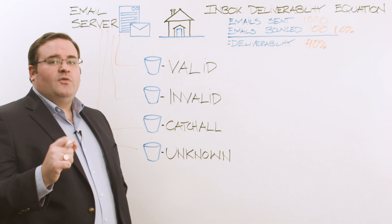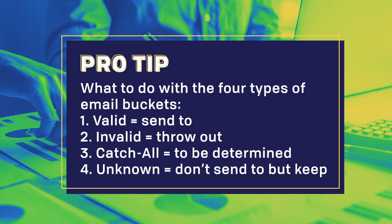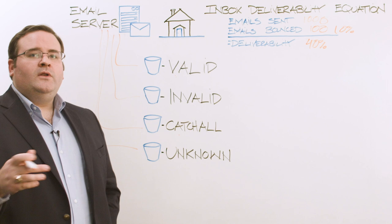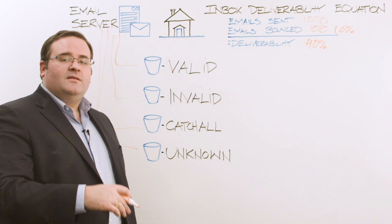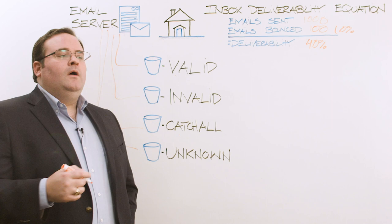So what exactly should you send to? Valids are good to send to. Invalids are bad to send to. Catch-alls are the iffy area, and unknowns should not be sent to right now but shouldn't be thrown away. There's actually a fifth bucket — on our platform we provide about 25 additional segments, including historical results such as identifying role addresses, free mail accounts, disposable addresses, and other things that could be potentially bad or good for an email send depending on your use case.